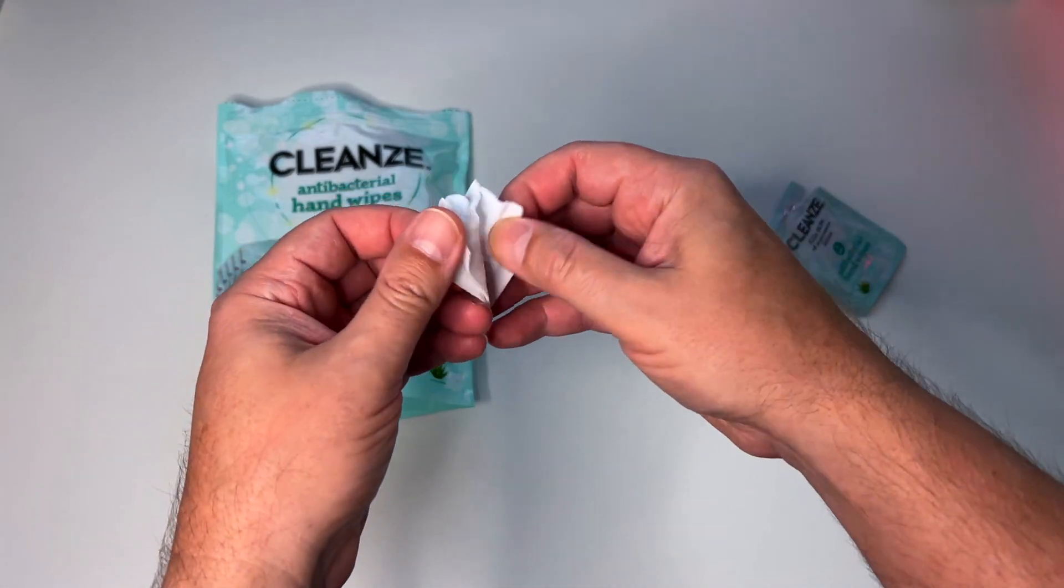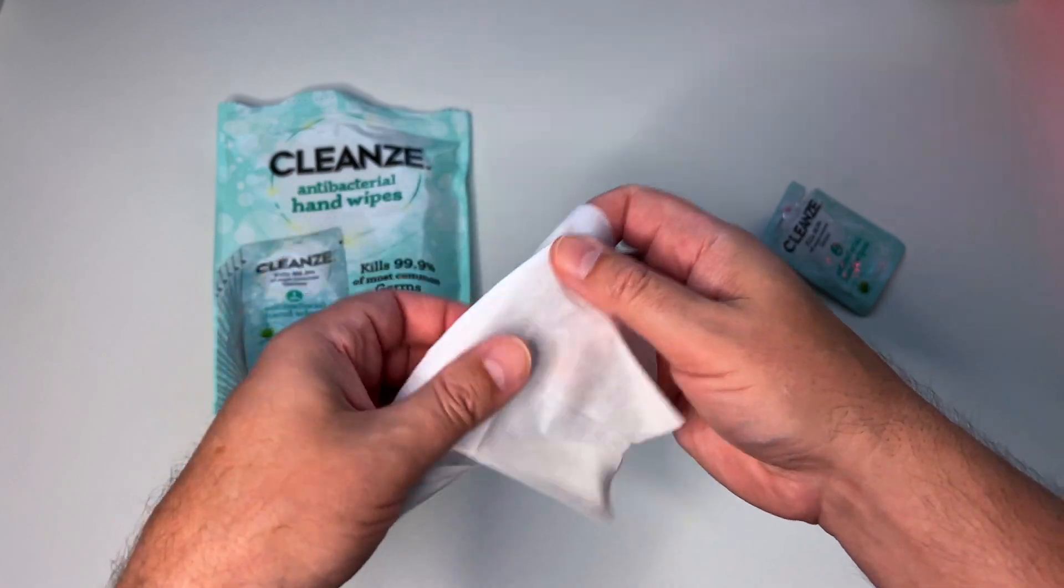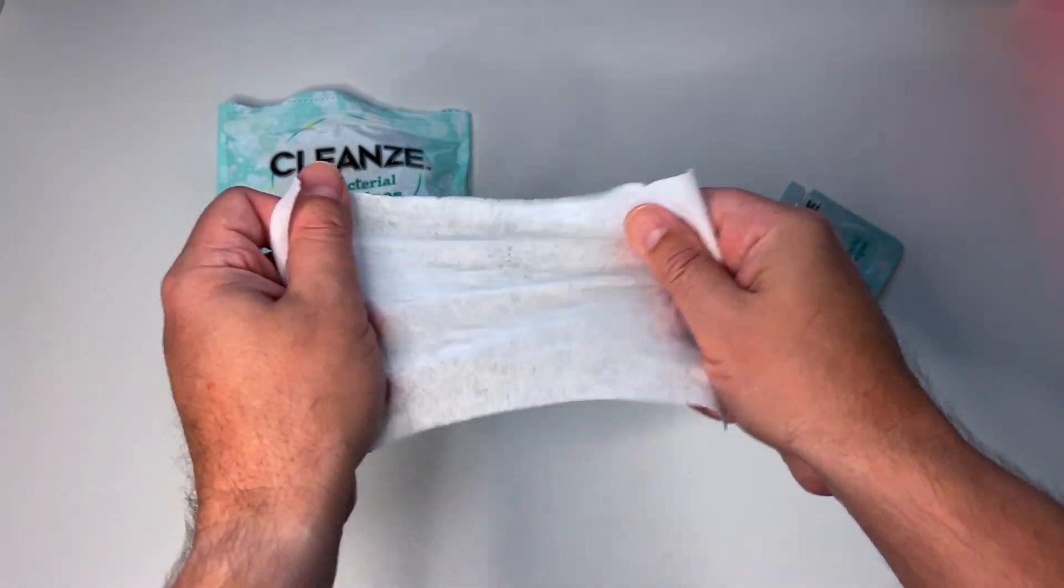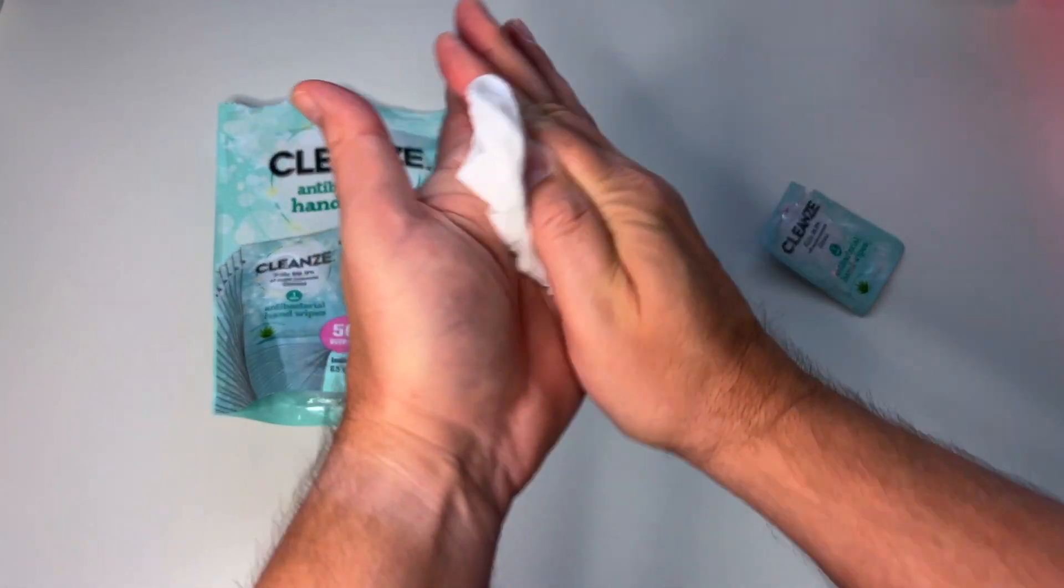Not only is it made with aloe to prevent dry hands, but it's easy to take with you wherever you go because they're individually wrapped. You can put them in your pocket, in your car, or in your purse, and they'll never dry out.